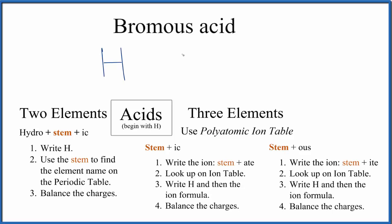So we look at the name. We're gonna look at the stem here. We have brome and then this OUS. So right here, stem plus OUS. We'll use these guidelines to write the formula. First, we write the stem. That's the brome. And then instead of OUS, we're gonna put ite at the end, and this will give us the name of the ion.